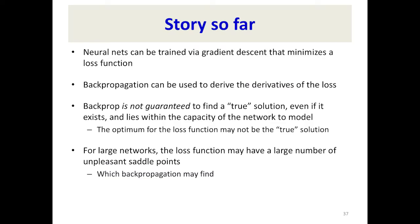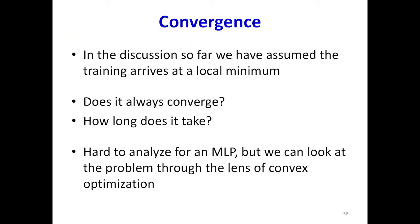Today we're going to dig a little deeper into problems of backpropagation — specifically problems of convergence. That is, can we even get to a minimum, and if so, what kind of problems will we find on the way, and what solutions can we try? The two main questions are: are we going to converge where we want to, and how long is it going to take?